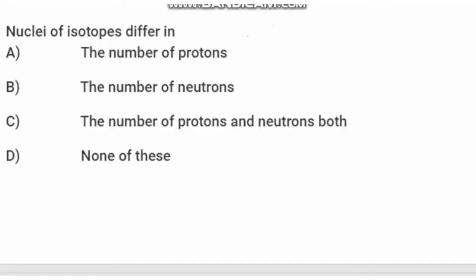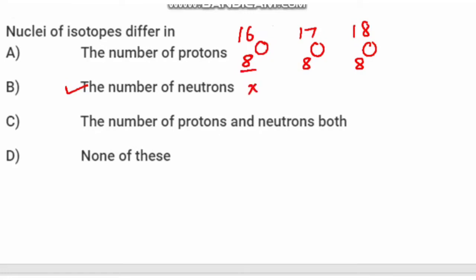Let's go on to multiple choice questions. First question: nuclei of isotopes differ in. Isotopes differ in the number of neutrons only. For example, isotopes of oxygen — there are three isotopes of oxygen: Oxygen-16, Oxygen-17, and Oxygen-18. All three oxygen isotopes have the same atomic number: 8.